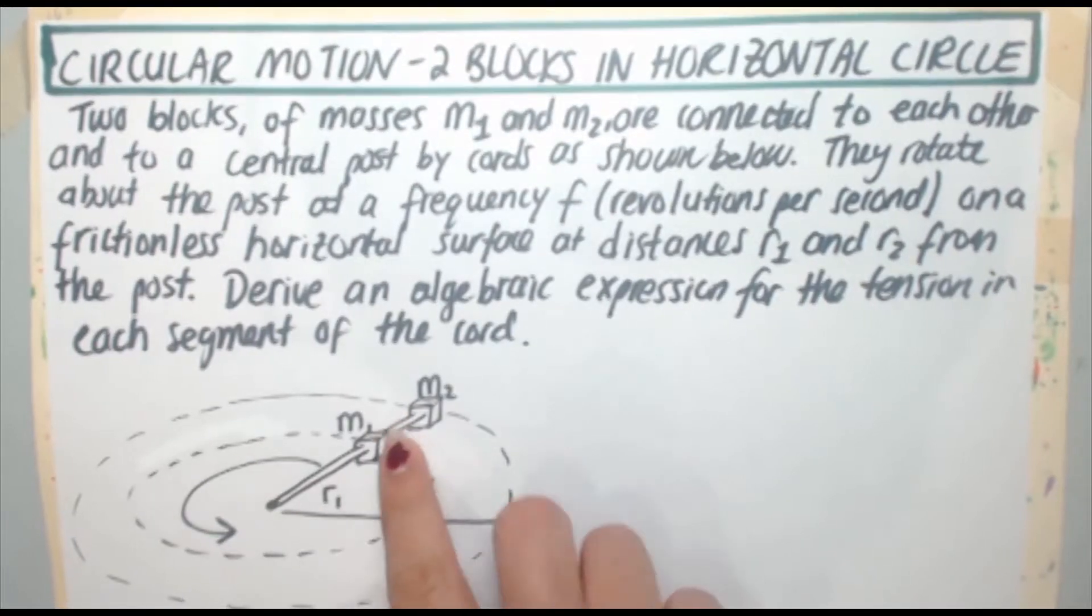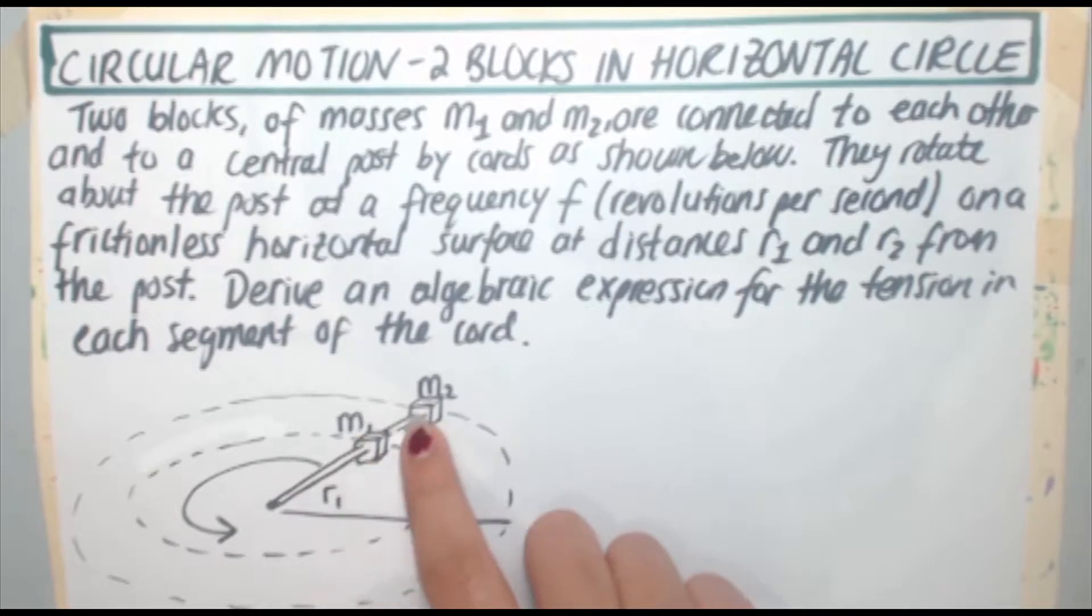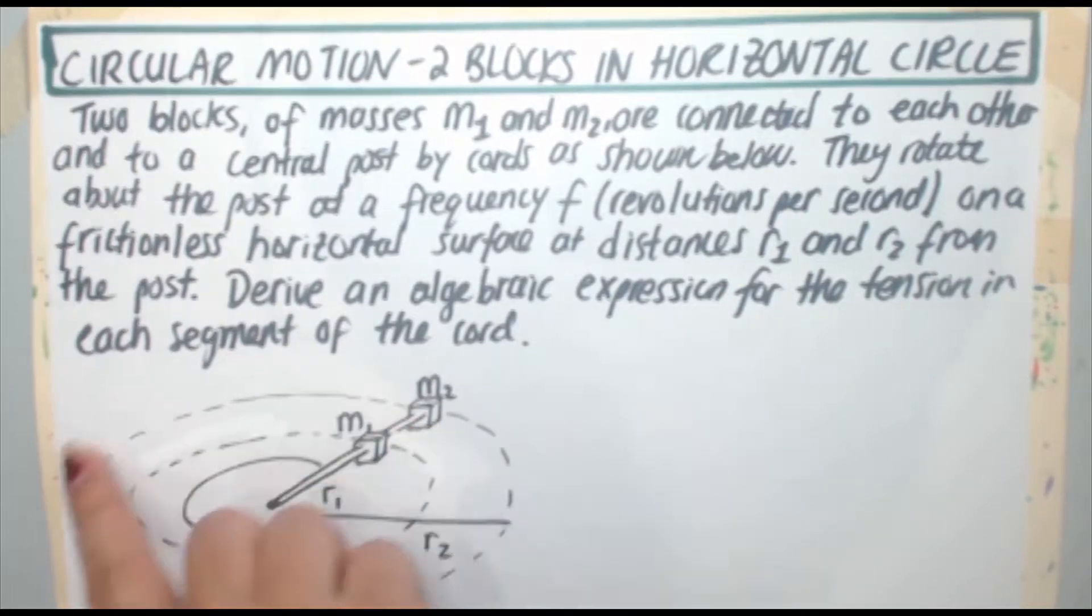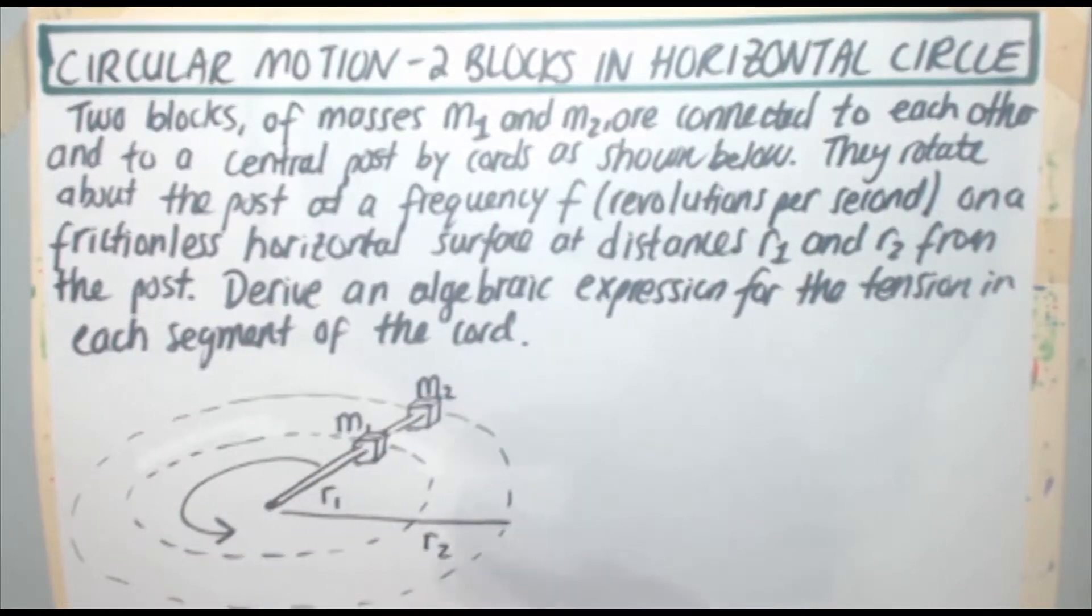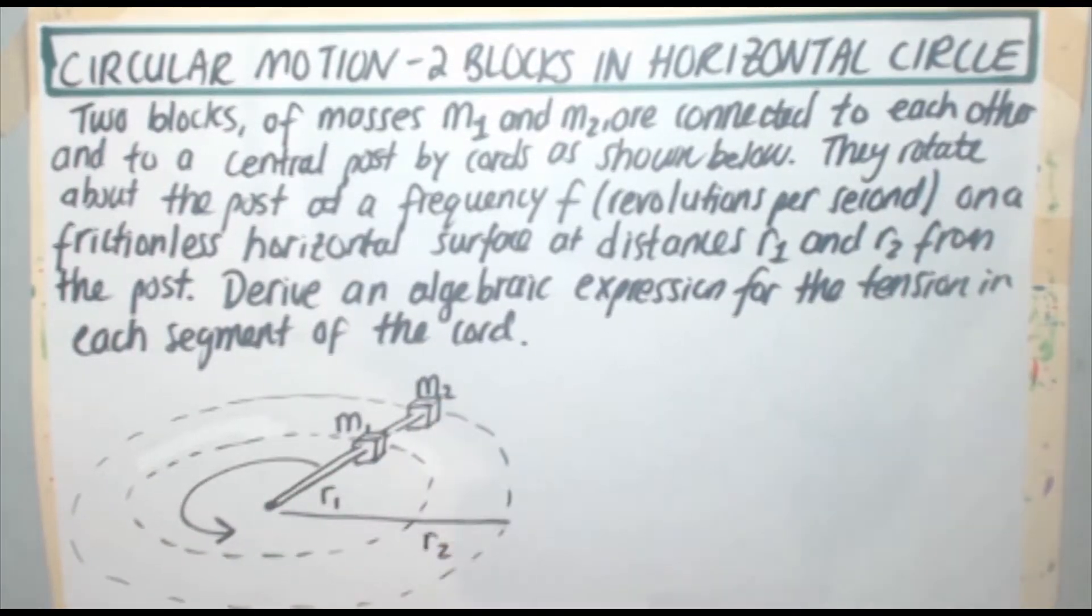So here's our chord, here are our two masses, m1 and m2. We need to find the tension here and the tension right there. Both of these masses are going in horizontal circles, m1 is the distance r1 from the center, m2 is the distance r2 from the center.